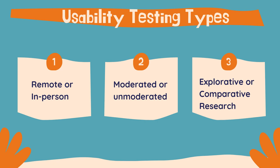The second type is remote or in-person. Remote usability tests are done over the internet or by phone, while in-person testing requires the test to be completed in the physical presence of a UX researcher or moderator. In-person tests provide extra data points since researchers can observe body language and facial expressions, though they are usually expensive and time-consuming. Thirdly, explorative tests are open-ended where participants brainstorm and share opinions, whereas comparative research asks users to choose between two solutions and can be used to compare a website with its competitors.